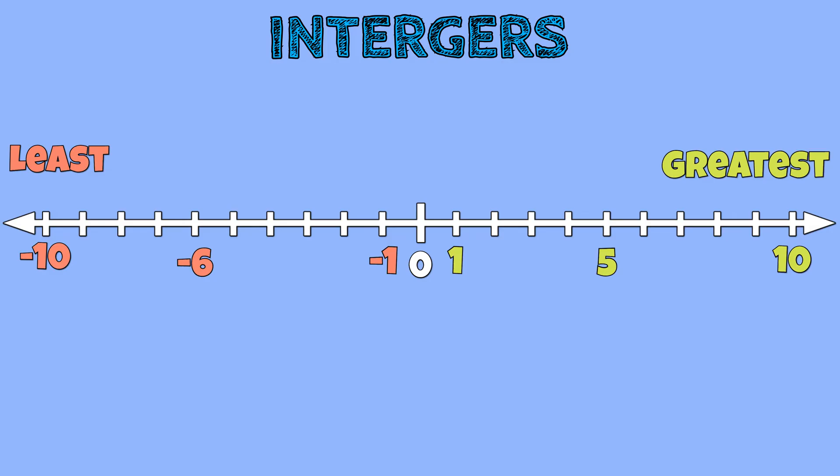Now that we have plotted all numbers, we can place them in order from least to greatest. The further we move to the left, the smaller the numbers are in value. Since the digit negative 6 is furthest to the left, it has the smallest value.